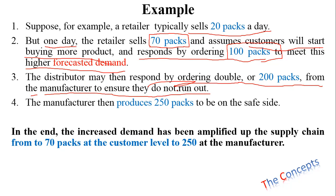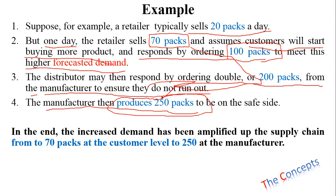The distributor impacts the manufacturer, and the manufacturer, in order to be on the safe side, produces 250 packs. So what we've seen is that a one-day increase from 20 to 70 packs caused the retailer to forecast ongoing higher demand and order 100 packs. The distributor then orders 200 from the manufacturer, and the manufacturer produces 250. The increased demand has been amplified up the supply chain — from 70 packs at the customer level to 250 at the manufacturer level.